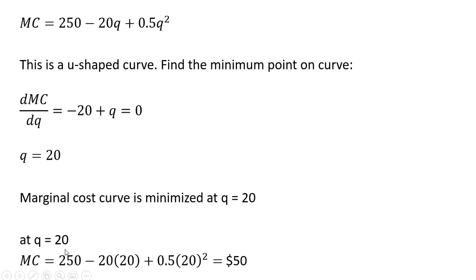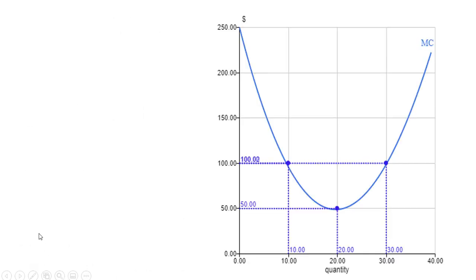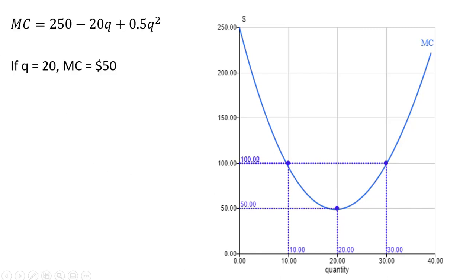So the marginal cost curve's lowest point occurs when q equals 20. If we plug 20 into the marginal cost equation, marginal cost will be $50. Here is a graph of that U-shaped marginal cost curve. As we saw, if q equals 20, that is where marginal cost is minimized at $50 — that's the bottom of the U.